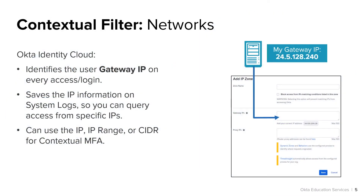When using network IP context in your network zones, Okta will identify the user's gateway IP on every single access attempt. If the IP address matches one in your network zones and that zone is being used within an Okta policy, then the actions of that policy may be carried out depending on other rules within the policy. Network zones based on IP address are one of the most common triggers used to apply a policy to a user on sign-in. Access requests will also be captured within your Okta system logs for later evaluation or proactive measures. The network IP zone supports single or multiple IP addresses, ranges, and CIDR notation.